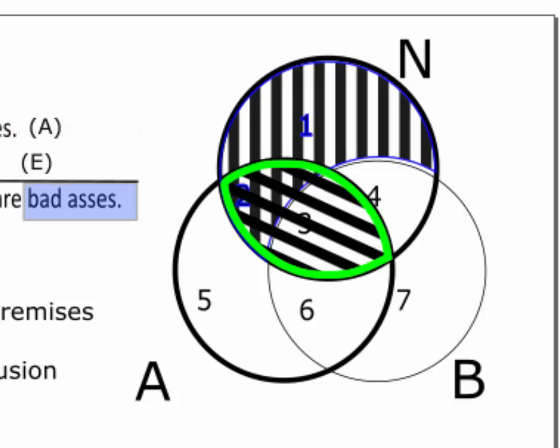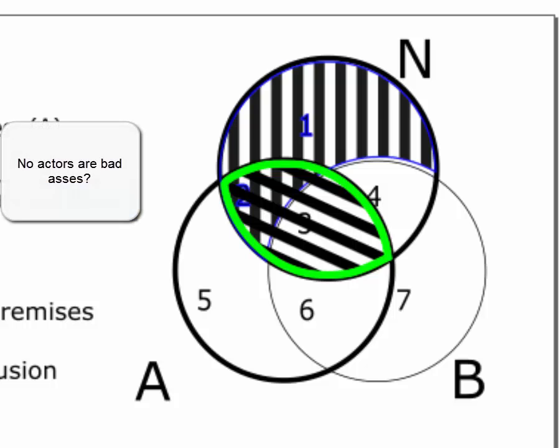Now, stop diagramming. One of the most common errors I see is that students just continue to diagram the conclusion too. But if the argument is valid, what the conclusion says should already be forced by the diagram of the premises.